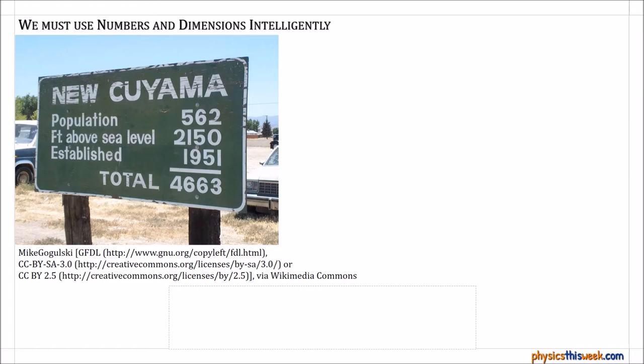The other way that we use dimensions in physics is when we talk about different types of measurement. So this is a sign in a small town out west somewhere, and the funny thing about this sign, if you're not seeing it already, is the fact that they're adding three different types of measurements to get one group of numbers. So they've got population which would be measured in humans, feet above sea level obviously measured in feet, and a year, and they're adding those all together. Well it turns out in physics, and just in life in general, you can only add these numbers when they have the same dimension.